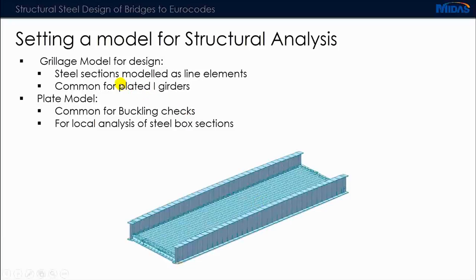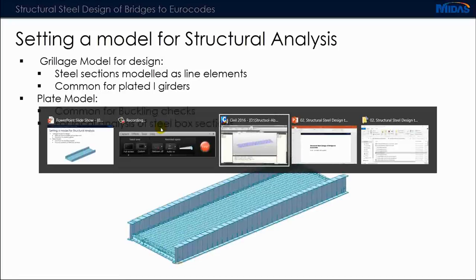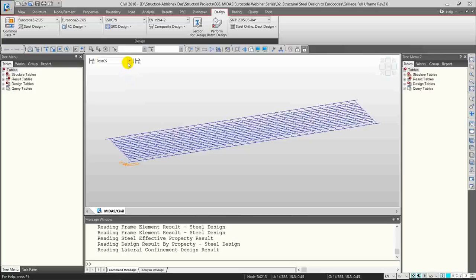In the grillage model, the main structural steel girder elements are modeled as line elements with transversely spanning members acting as cross girders. This model is usually used to utilize the automated steel code checks in MIDAS Civil. The plate model is more suitable for detailed checks like buckling analysis, finite element stress checks, and steel box girder bridges where we want to focus on local flange and web effects.